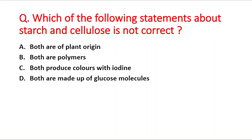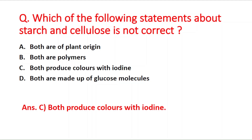Next question: which of the following statements about starch and cellulose is not correct? Option A: both are of plant origin. Option B: both are polymers. Option C: both produce colors with iodine. Option D: both are made up of glucose molecules. The right answer is option C — both do not produce the same color with iodine.